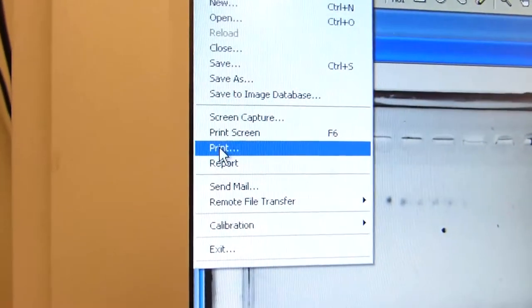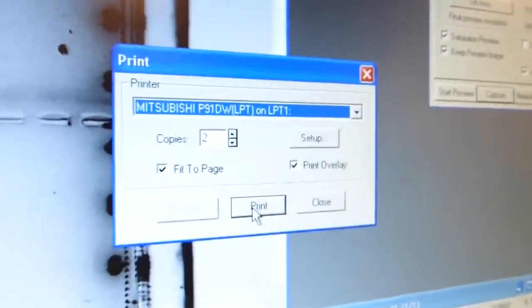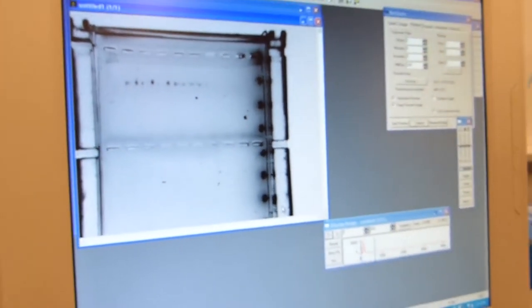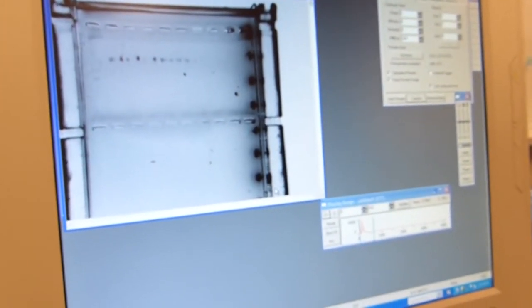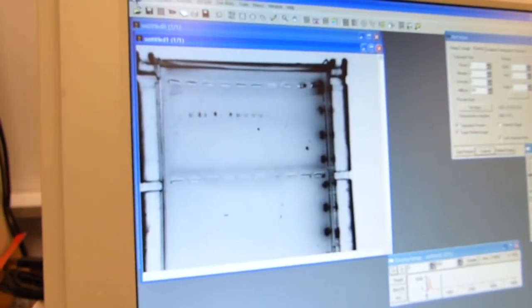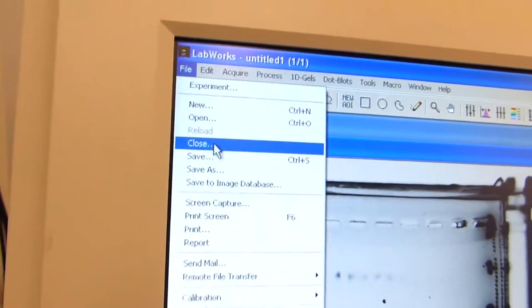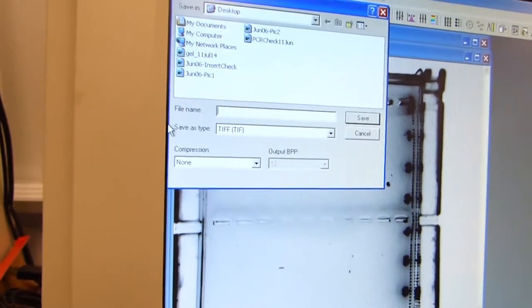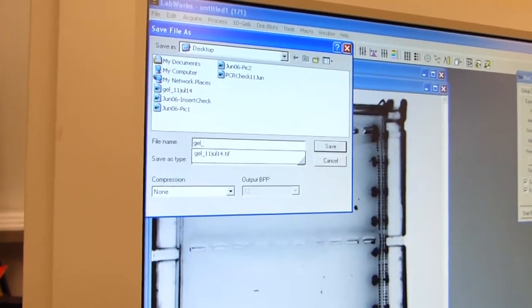From here we can file, print. And today we are printing two copies, one for each of us. While this is printing, you will also want to save the image. So you just go up to file, save and then name it something like gel and then the date.